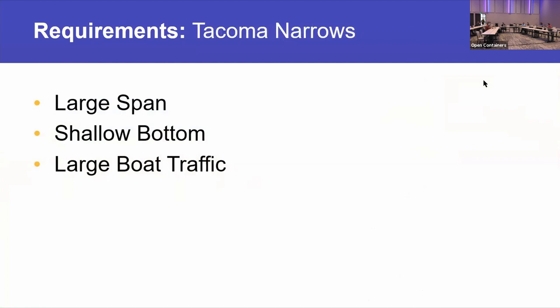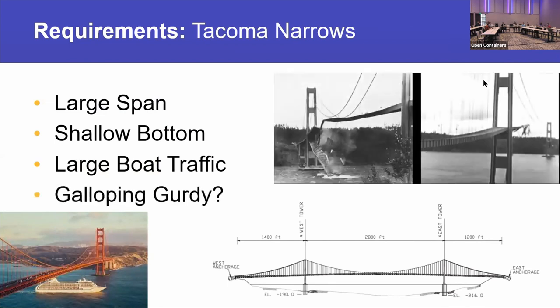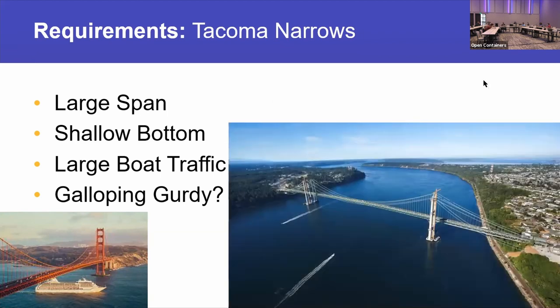The Narrows has a large span, shallow bottom, and large boat traffic, so suspension bridges turn out to be the best design there. But the first one didn't go so well — there were catastrophic problems. That's the Galloping Gertie that collapsed. The suspension bridge was the right design but they didn't account for wind load. Even a good design still needs learnings along the way. Now there's a nice bridge and you can get across.